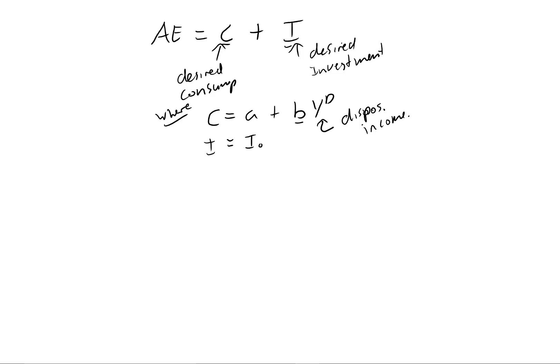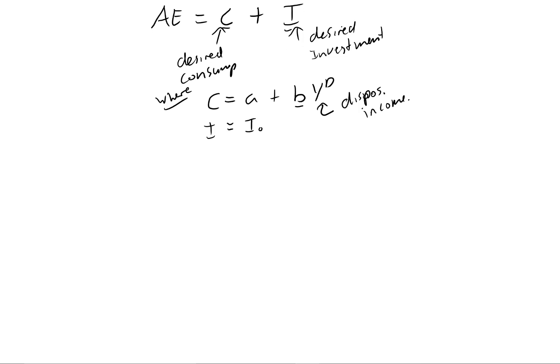So the first step we can do to solve this model simply, we'll just put one, plug in functional forms. So we just want to plug in these functional forms we have here, so the C and this I, we're going to plug these back into this AE function, and we're just going to simplify.